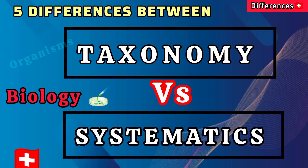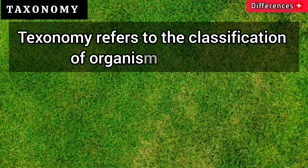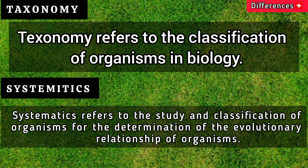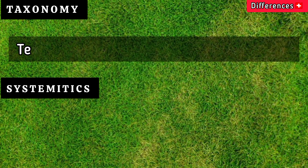In this video we will explain the difference between taxonomy versus systematics. Taxonomy refers to the classification of organisms in biology. Systematics refers to the study and classification of organisms for the determination of the evolutionary relationship of organisms.